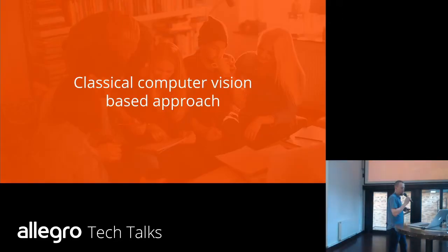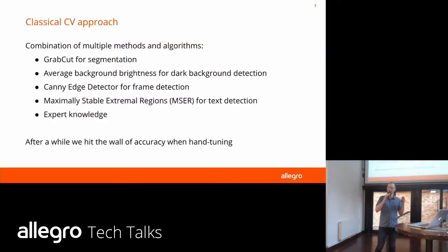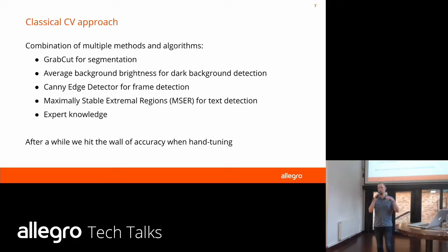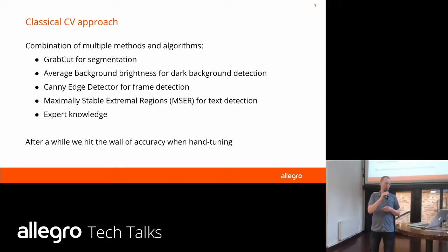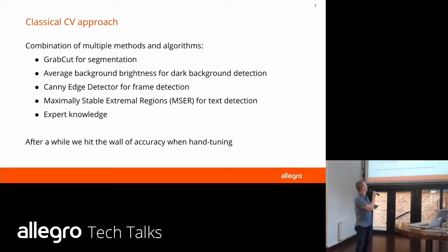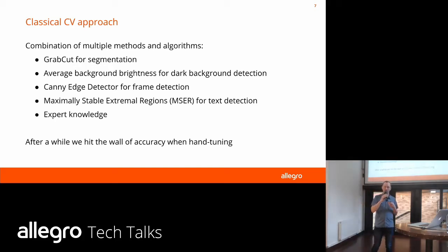The first solution we tried was classical computer vision-based approaches. We used a combination of algorithms: GrabCut for segmentation — finding which pixels refer to the product itself — then averaged background brightness to detect the background. We used a Canny edge detector for finding edges approximated as frames, and maximally stable extremal regions (MSER) for detecting text. This was combined with expert knowledge, but after a while it proved quite hard to manually tune the hyperparameters and combine those outputs together.